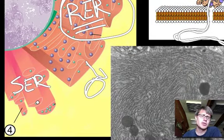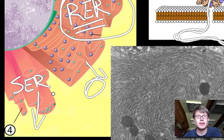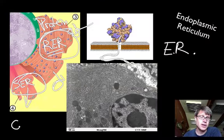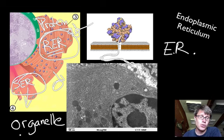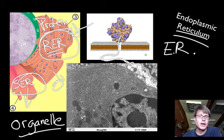The smooth ER doesn't have ribosomes on its surface, but it's no less important. It makes lipids and steroids, is responsible for metabolism and breakdown of carbohydrates, regulates calcium ion concentration inside the cell, and detoxifies by breaking down toxins. So the smooth ER shows a high amount of specialization — it does a number of different jobs that aren't done by other parts of the cell. That's called an organelle: a tiny organ, a part of the cell that allows for specialization. An interesting side note: alcoholics have a much higher amount of smooth ER in their cells, especially in the liver, because they're constantly breaking down alcohol and getting rid of the toxin.